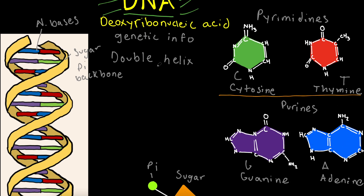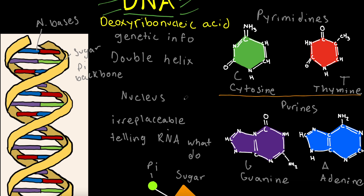Now let's talk about where DNA carries out its functions. DNA carries out its functions in the nucleus, basically the control center of the cell. It cannot leave the nucleus, which is one disadvantage of DNA. It is also irreplaceable. DNA calls orders to the RNA — it's basically the army general, telling RNA what to do and making a copy of itself for the RNA. In general, DNA codes for our genetic information, also known as our blueprint. It is a double helix, stays in the nucleus, is irreplaceable, and it codes for the synthesis of RNA and other proteins.